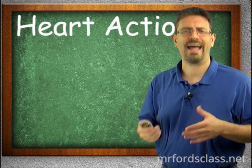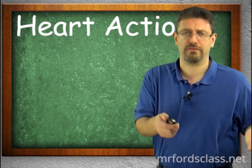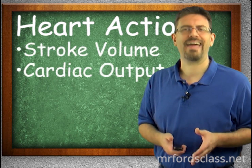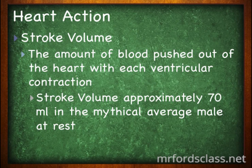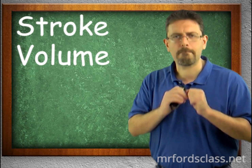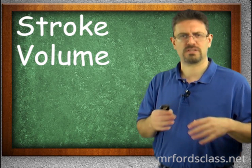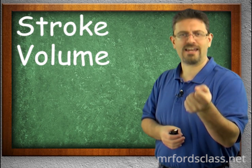The next concept is heart action. The two measurements we look at are stroke volume and cardiac output. Stroke volume is defined as the amount of blood pushed out of the heart with each ventricular contraction. When the ventricles — the bottom, larger part of the heart that does the squeezing — contract, how much blood does each squeeze push out? That amount is your stroke volume.